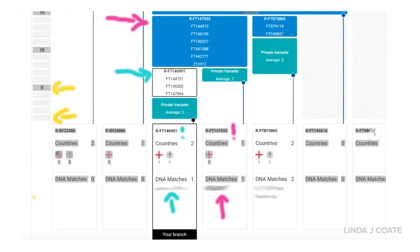The first thing you want to notice are the columns. The highlighted column with an aqua arrow and the highlighted column with a bright pink arrow both represent cousin matches that I have, and the cousin matches are blanked out for their privacy's sake.